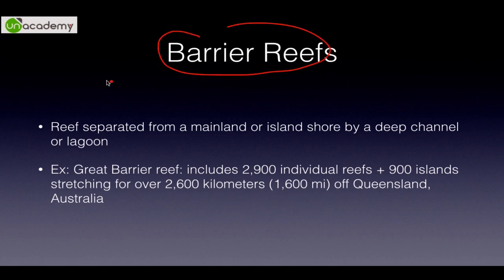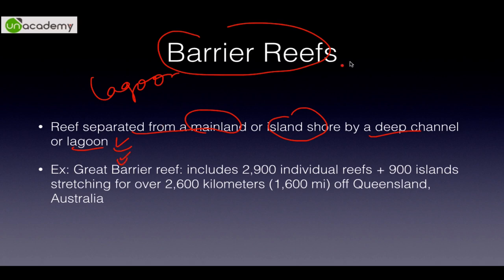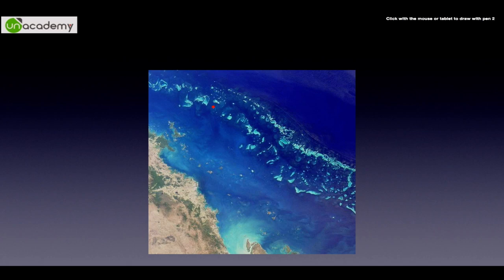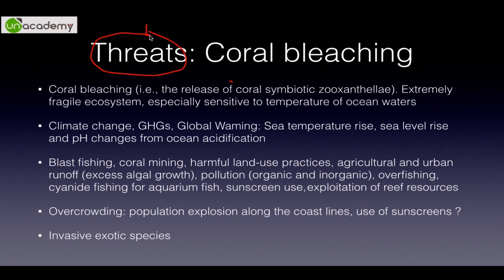Barrier reefs are separated from a mainland or island shore by a deep channel or lagoon. The characteristic example is the Great Barrier Reef. The Queensland region of Australia — eastern and northern part — has the world's largest barrier reef. It includes 2900 individual reefs, spreads over 2600 kilometers, and has 900 islands.